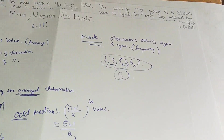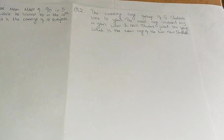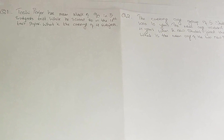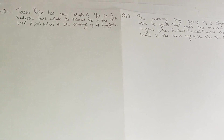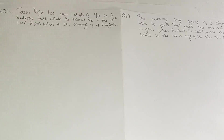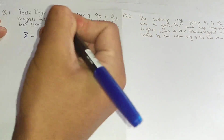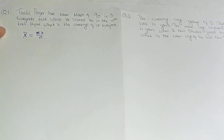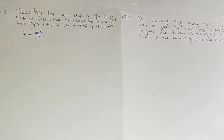Now let's look at different types of questions related to mean, median, and mode. Question 1: A student has a mean mark of 90 in three subjects. He scored 70 in the fourth test. What is the average of four subjects? Mean is also called average, so we use the formula X-bar = sigma X / n.